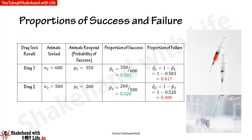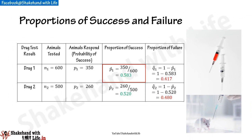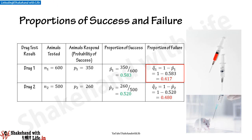Now calculate the proportions of success and failure in the two samples. The proportion of success in sample one is p1-cap equals 350 divided by 600, which comes out as 0.583. The proportion of failure in sample one is q1-cap equals 1 minus p1-cap, which is 1 minus 0.583, giving 0.417.